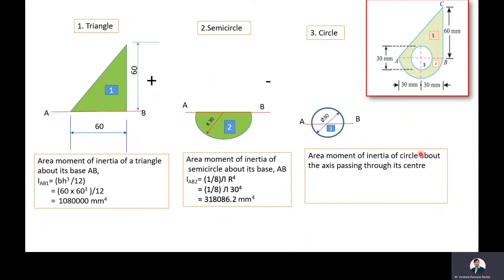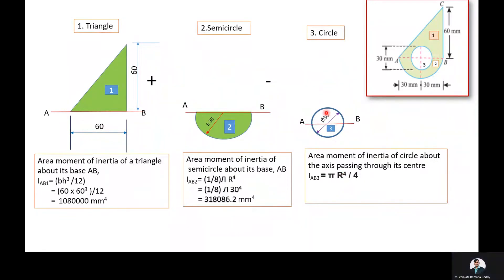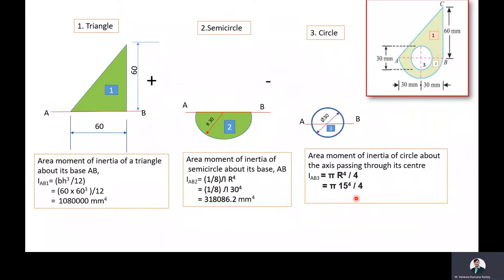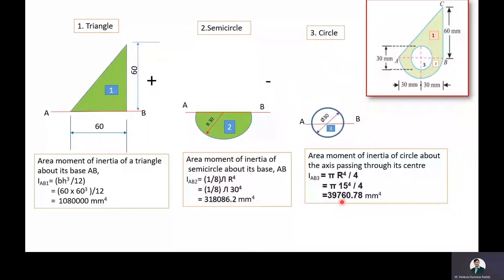The moment of inertia of the circle about its centroidal axis is (π/4)r⁴, where r = 15 mm. Substituting r = 15 mm: I = π × 15⁴ / 4. After calculating, we get 39,760.78 mm⁴.